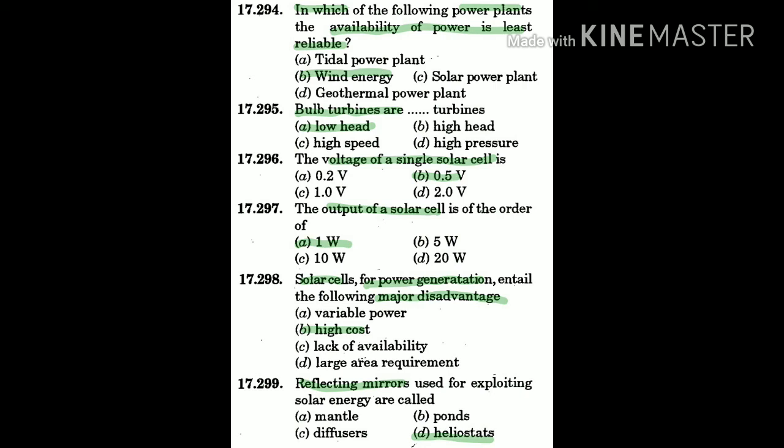Question 298: Solar cell for power generation entails the following major disadvantages — the answer is B: high cost. Question 299: Reflecting mirrors used for exploiting solar energy are called — the answer is D: heliostats.